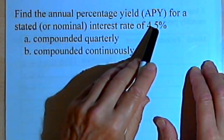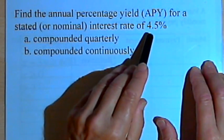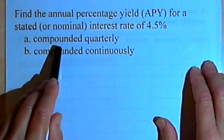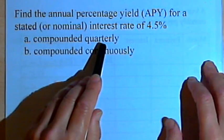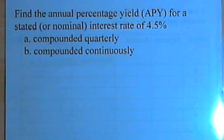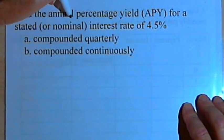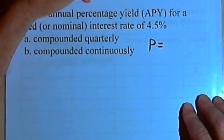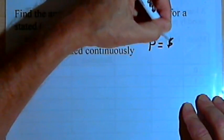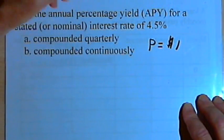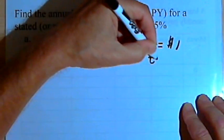What we want to do is figure out what the APY would be for 4.5%, starting with compounded quarterly. To make this an easy problem, since it doesn't say how much money you're investing, let's assume that the principal is just one dollar, and you're putting it into the bank for one year.